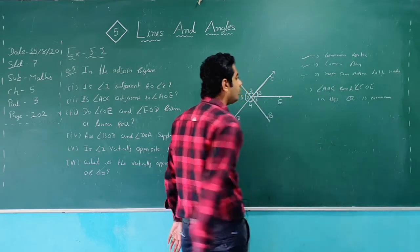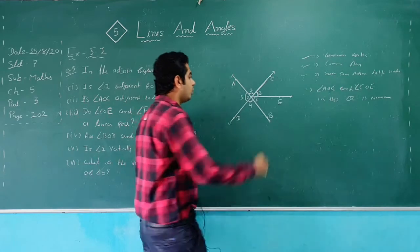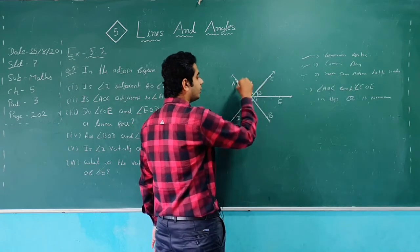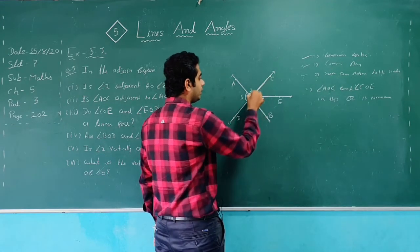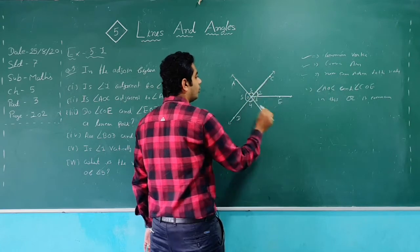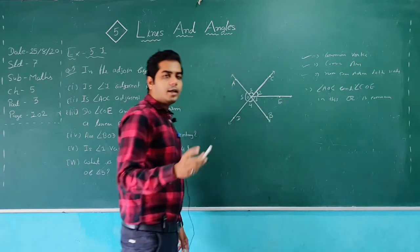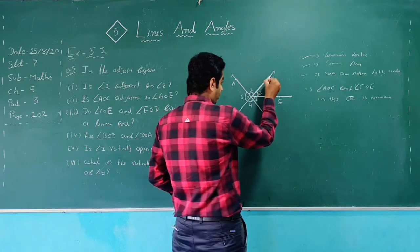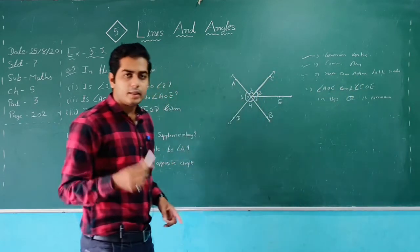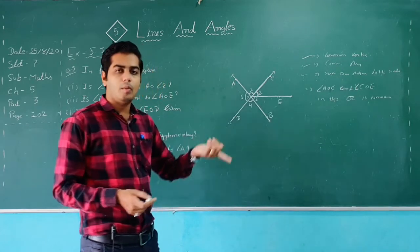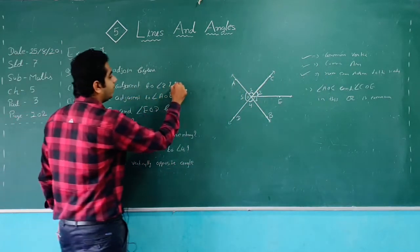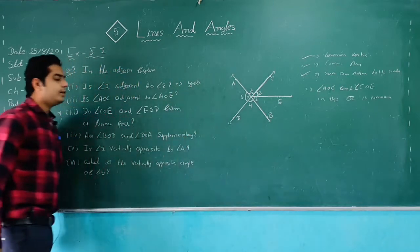The third condition is non-common arm on both sides of the common arm. OC is the common arm, and AO and OE are the non-common arms — they are on either side of OC. So the third condition is also fulfilled. Therefore, yes, angle 1 is adjacent to angle 2, because all three conditions of adjacent angles are fulfilled.